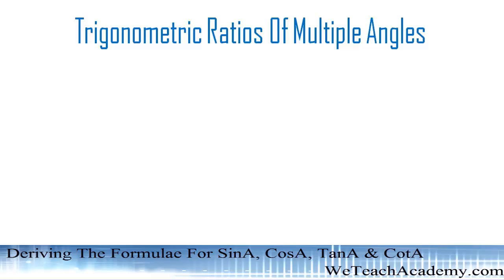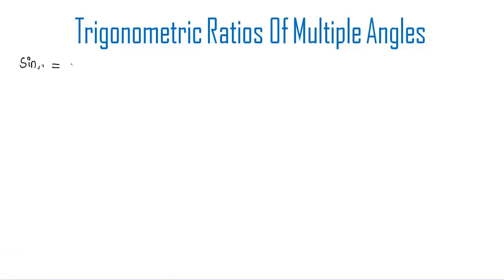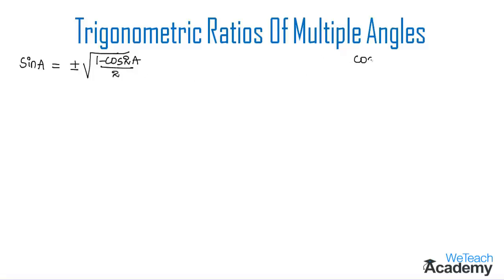Hello guys, welcome to vDitch Academy. Today, here in this section, we are going to derive the formula for trigonometric ratios of multiple angles. Those are sin a is equal to plus or minus under root 1 minus cos 2a by 2, and the formula for cos a which is equal to plus or minus under root 1 plus cos 2a by 2.